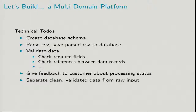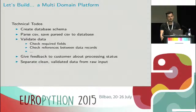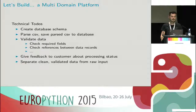There's still a lot of technical work to do. We have to create a database schema based on the business domain. We have to parse the CSV and save parsed data to the database. We have to validate that data — checking that required fields are filled, that a date field contains no invalid values like 'today' or 'tomorrow', and that references between data records are correct. We want to give feedback to the customer about the processing status. And it's important that we can separate the data received from the customer from the clean, validated data used for machine learning — always tracking what was sent and what we made from it.